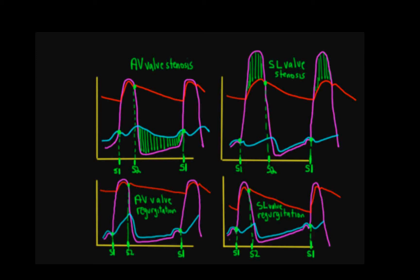Also note that in AV valve stenosis, the Y descent is blunted because blood has difficulty getting from the atria to the ventricle. Keep in mind that with stenosis, pressures on either side of the valve will be very different — pressure upstream of the valve will be much higher than normal. For semilunar valve stenosis, the peak systolic great artery pressure is no longer a valid estimate of peak ventricular pressure.